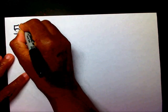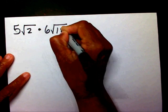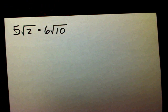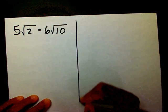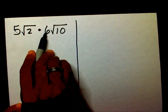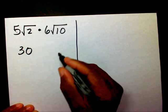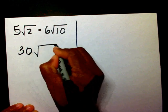I want you to try this one. So, if you'll please pause the video after I write this and simplify these radicals, please. So, we have our outside numbers, 5 and 6. 5 times 6 is 30. Radical, 2 times 10 is 20.